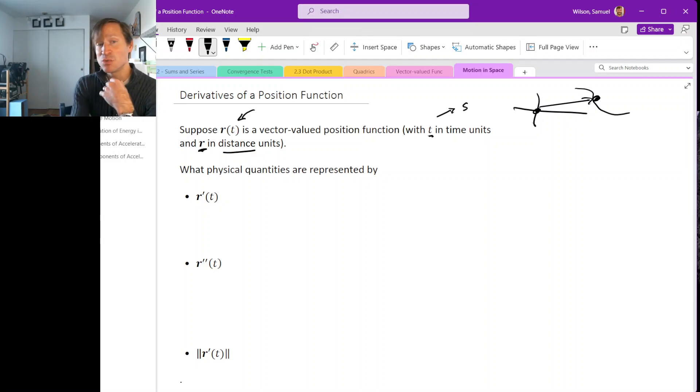So in this situation, what do the derivatives of this vector-valued function describe? Well, if our vector-valued function is an x-coordinate function, a y-coordinate function, and a z-coordinate function,